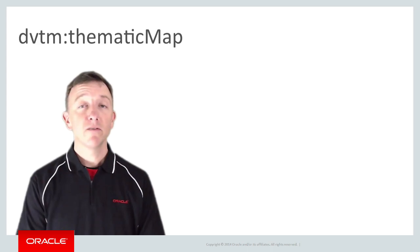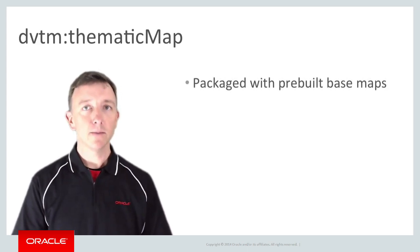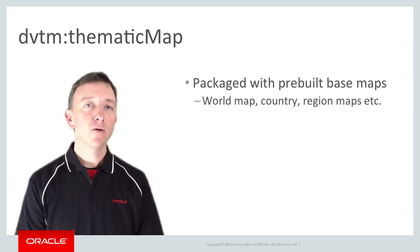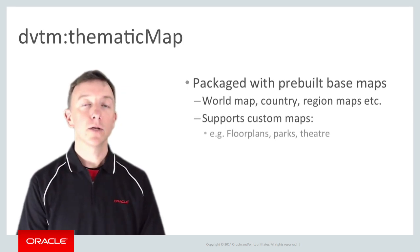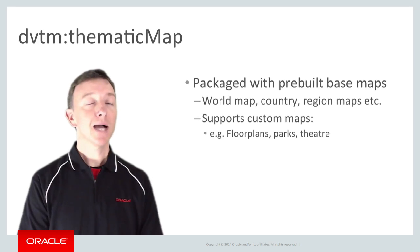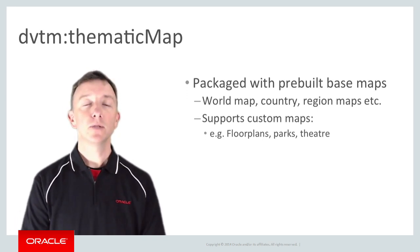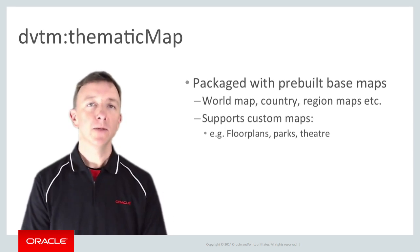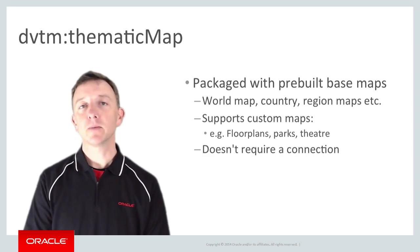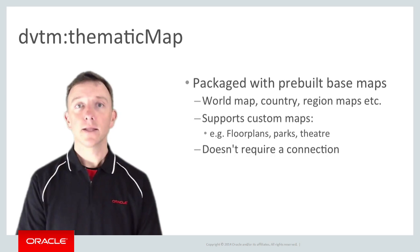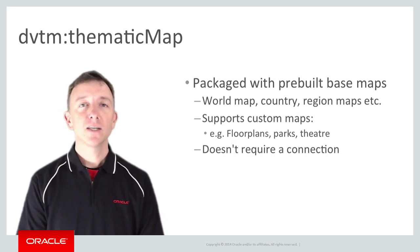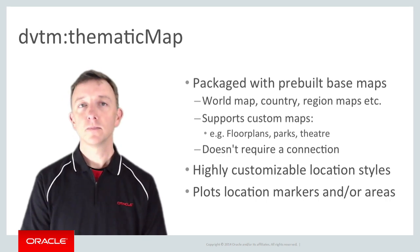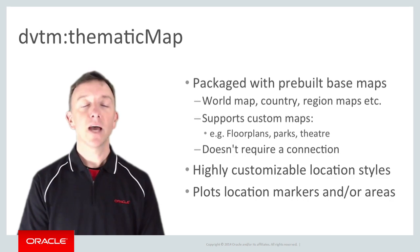The thematic map component available in mobile applications comes with a number of pre-built base maps, including the world, various countries, and regions such as Europe and APAC. What makes it particularly powerful is you can add your own custom maps — these can be any image including maps, floor plans to buildings, maps of parks or theatres, flight paths, and more. Unlike the geographic map, as the thematic map is based on pre-built maps which are just images installed with your application, a connection isn't required for the thematic map to be shown. Also unlike the geographic map which only allows limited styling, the thematic map provides a wealth of styling options to add not just location markers, but also areas, shapes, colours, text and much more.